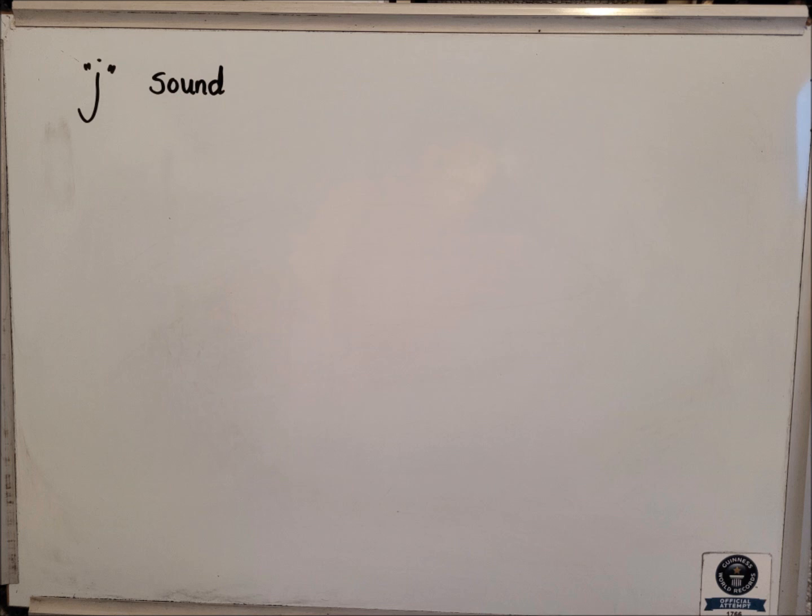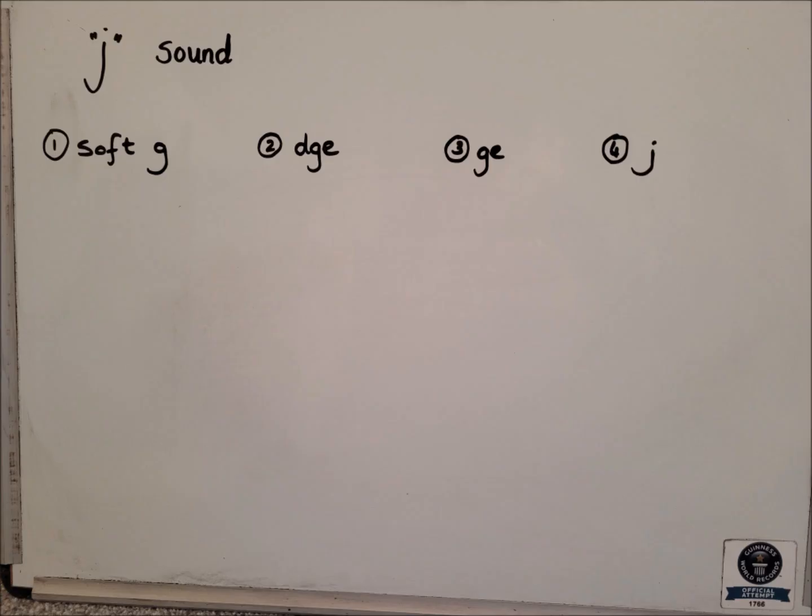So the first activity that I would like you to think about — I've got the four ways of spelling the J sound up on the screen just now. Soft G, DGE, GE, and J on its own at the end.